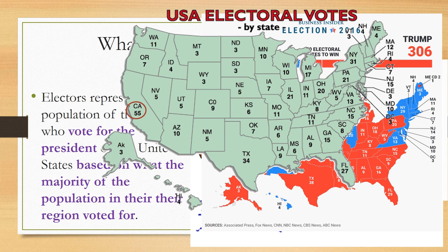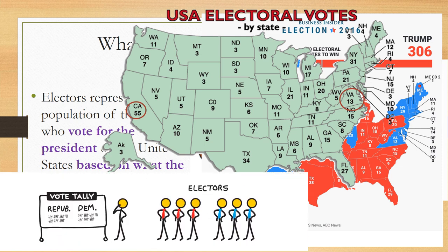You can see that California gets 55 electoral votes, whereas Virginia gets 13. You can learn even more about the Electoral College in the short video posted on Google Classroom called How the Electoral College Works.